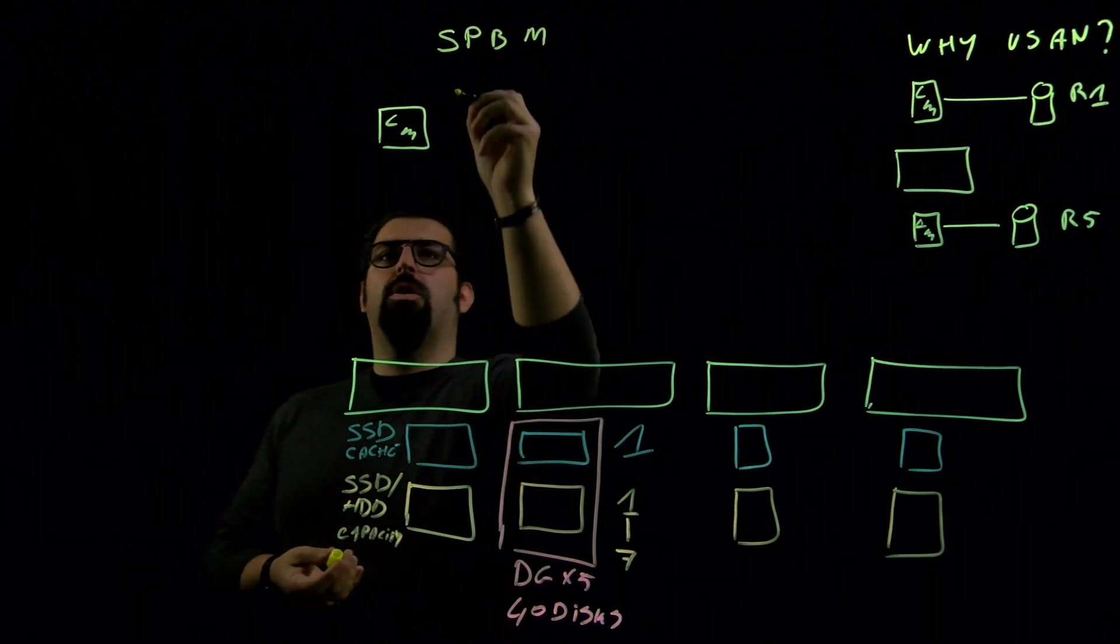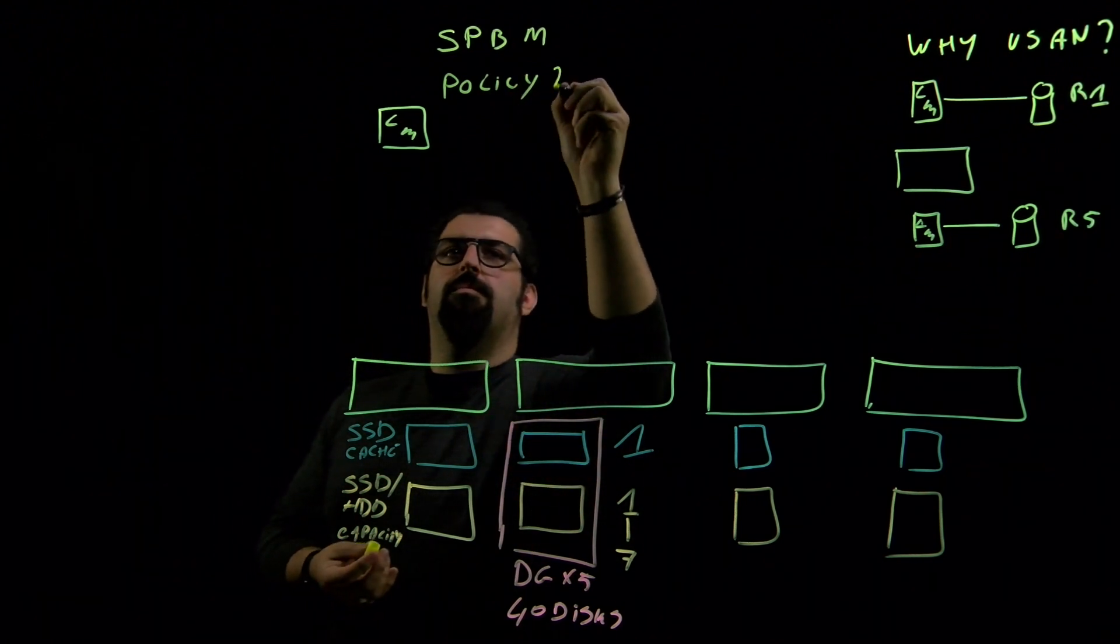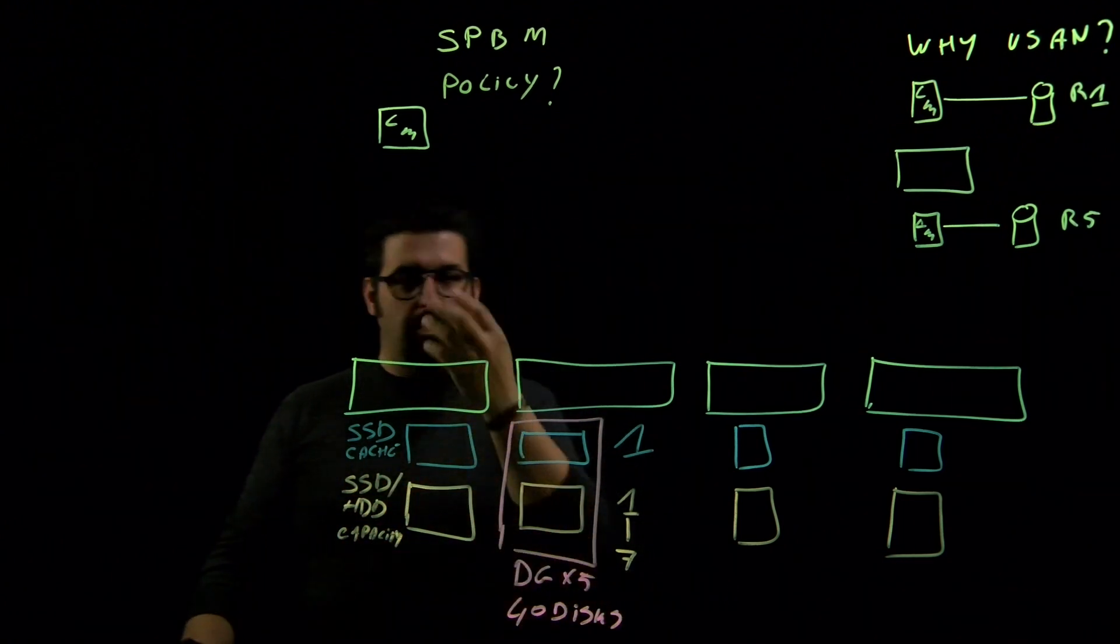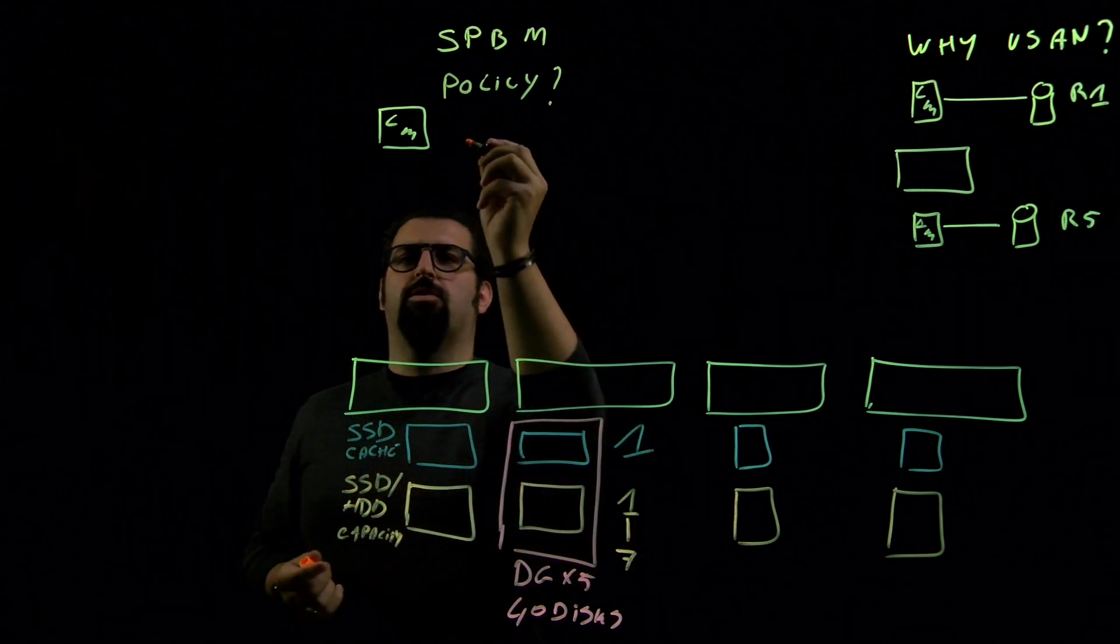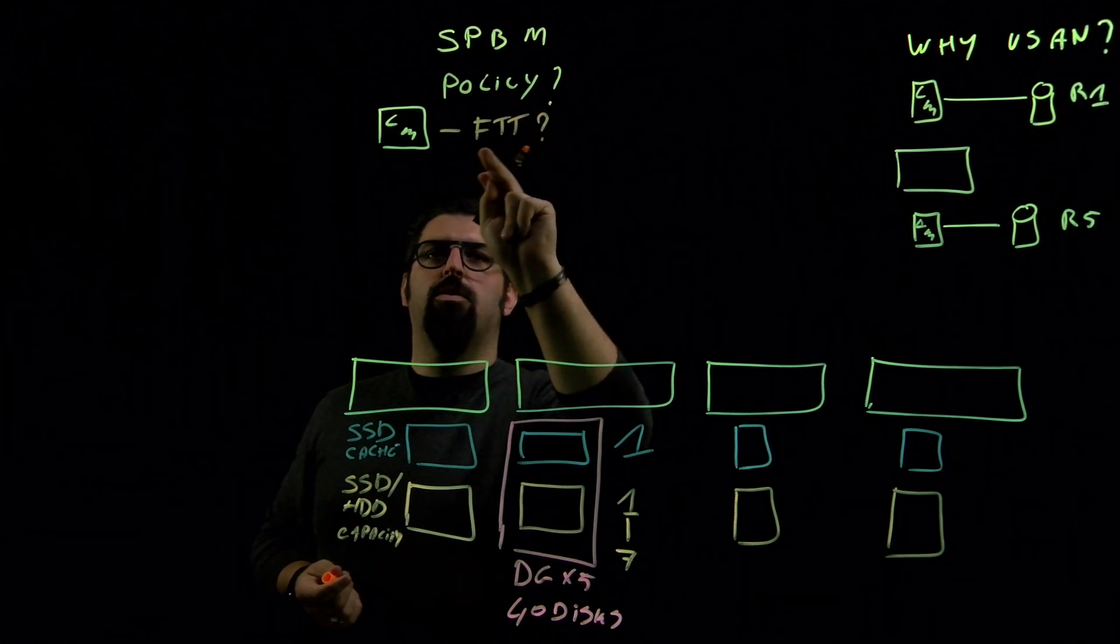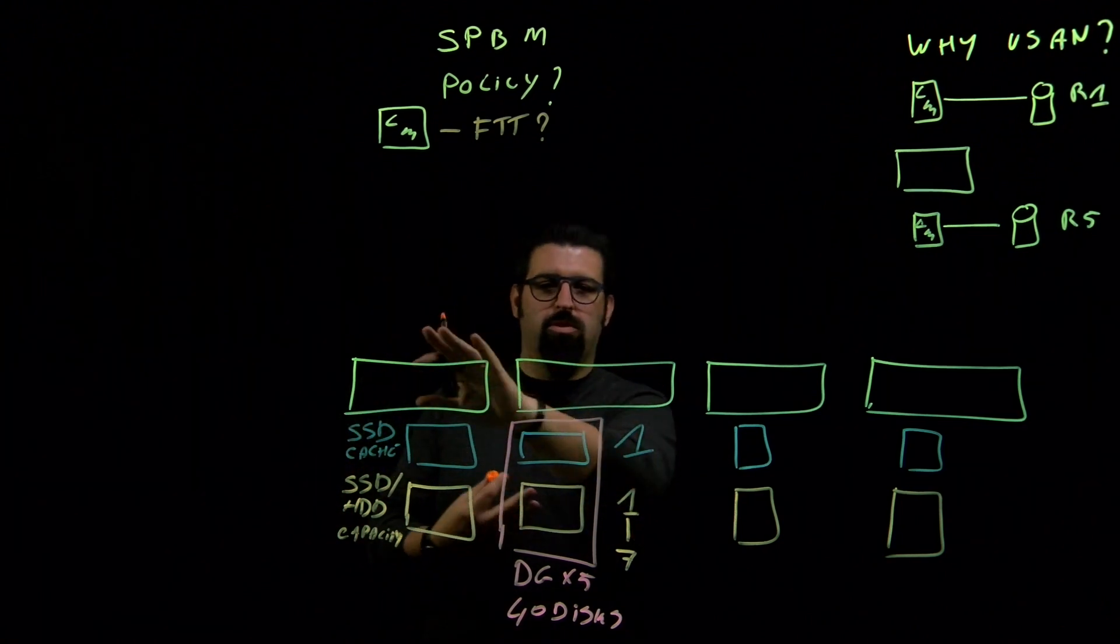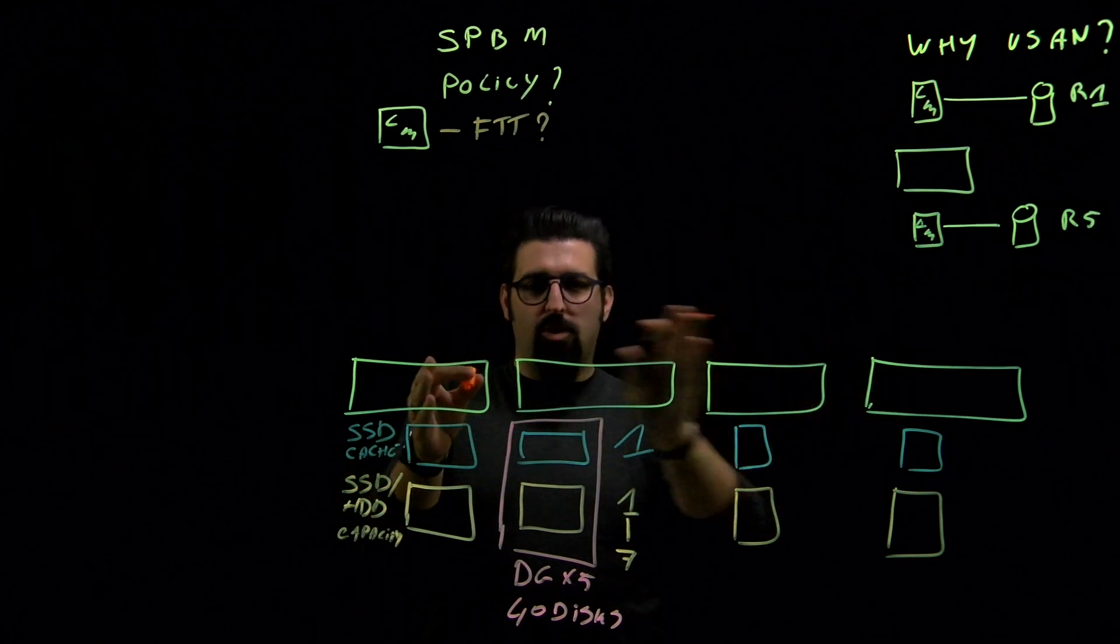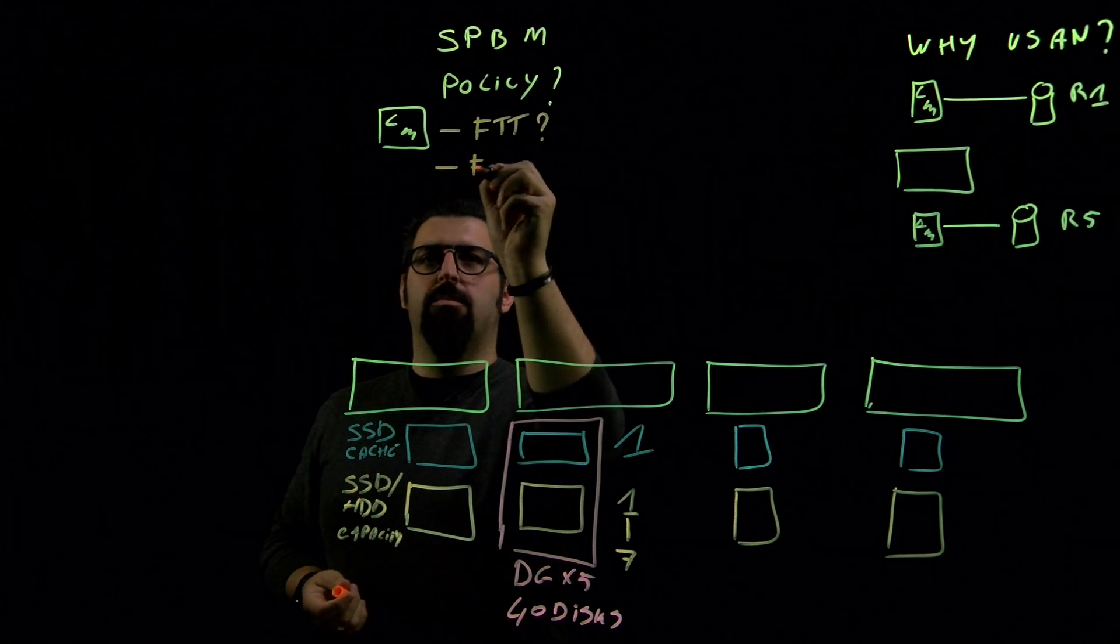Now what is a policy? We can create a policy with vSAN in multiple flavors and multiple ways, and there are a couple of rules that we can add to a policy. For example, a very important one is how many failures to tolerate do I want. What it means, if we would translate it back to this environment, is how many failures - component, host, whatever - can I tolerate before I start losing data.